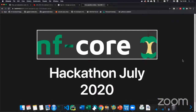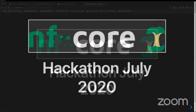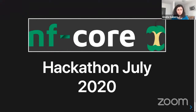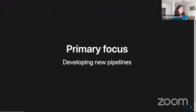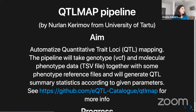All right. I'll make just a brief introduction. We had four projects for this hackathon, and this one was focusing on developing new pipelines. These were the group members involved in developing new pipelines for NF-core. And we have, first of all, the QTL map pipeline. Is there somebody here that was involved in the development of this pipeline that would like to give it a quick introduction?